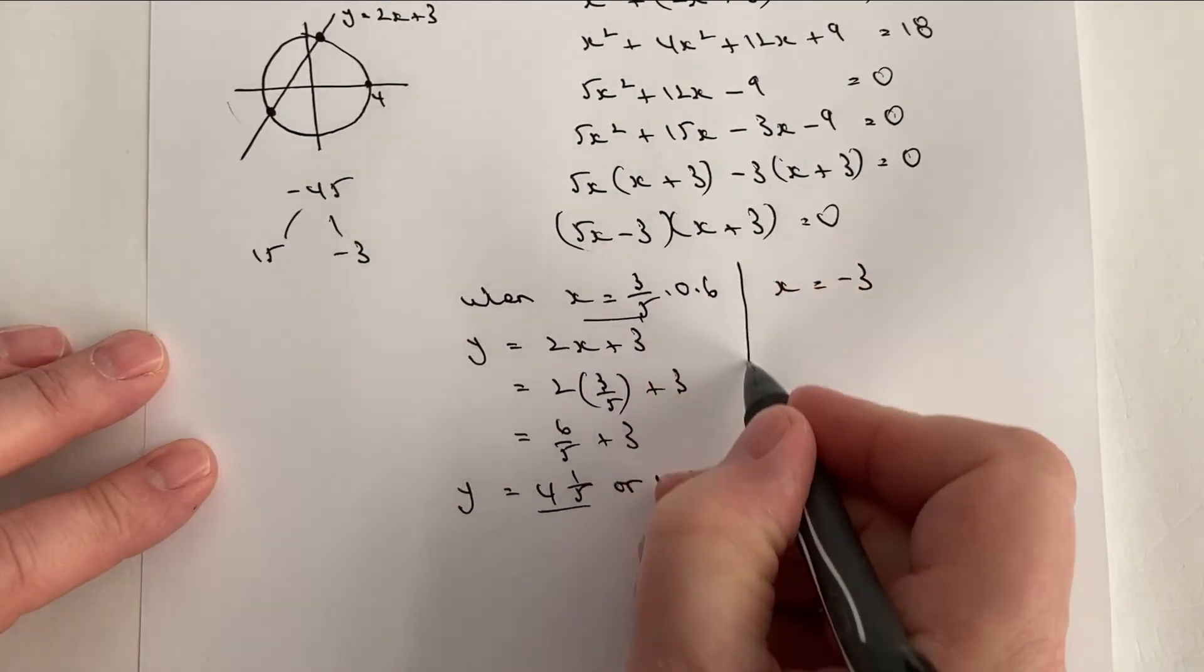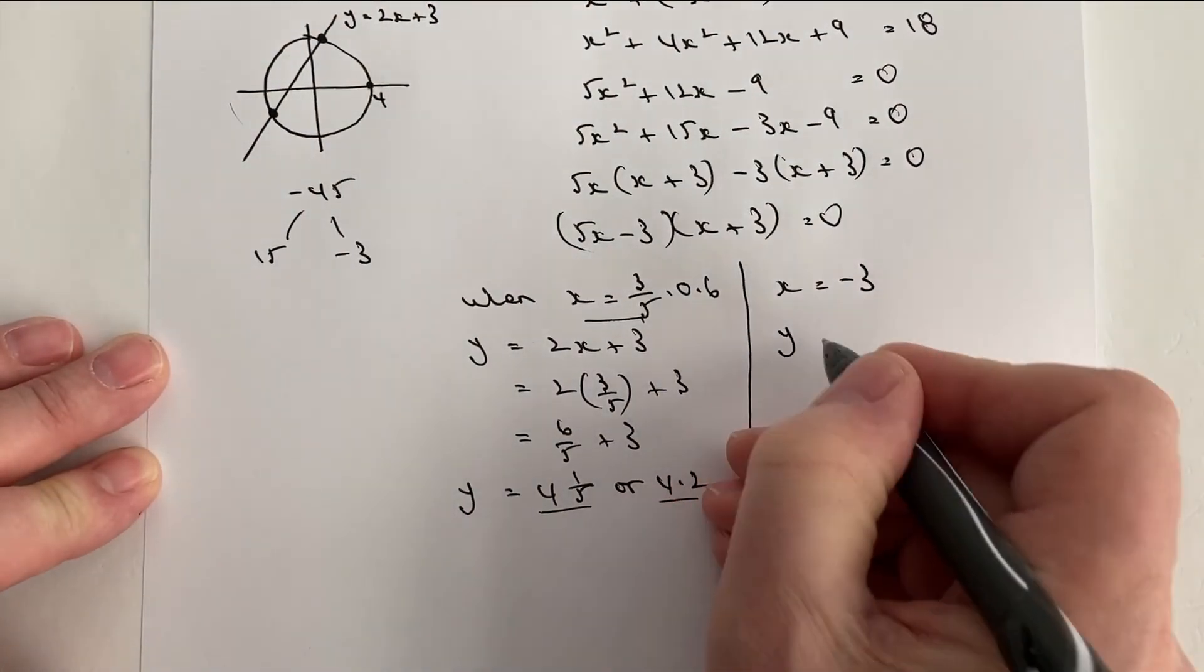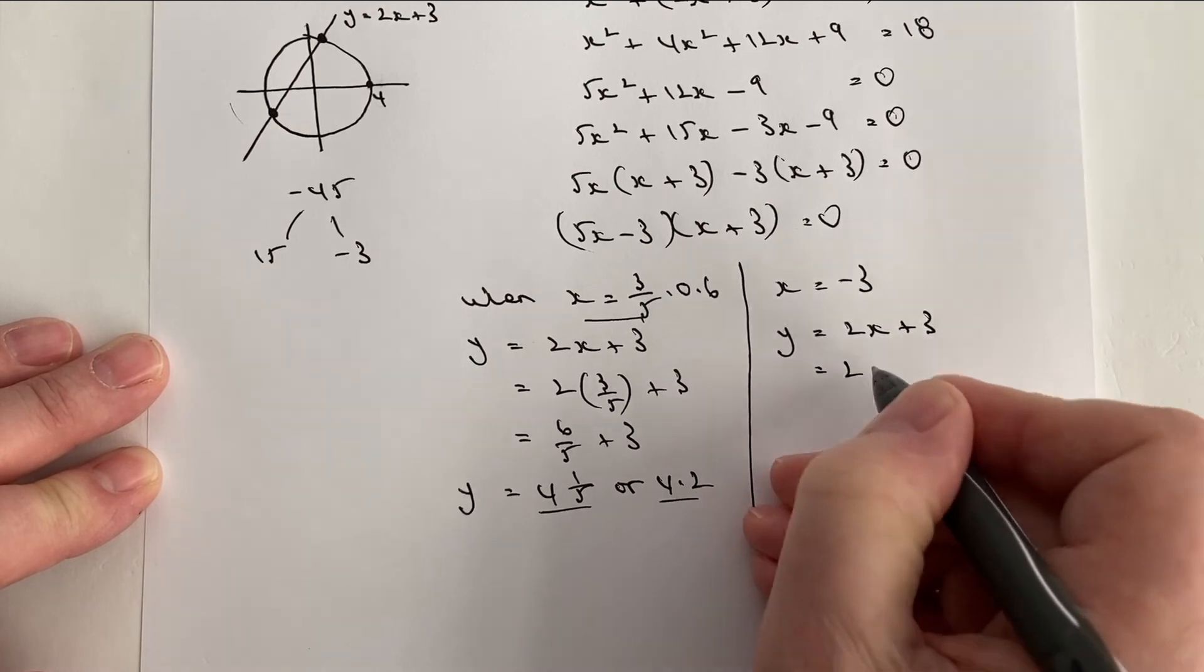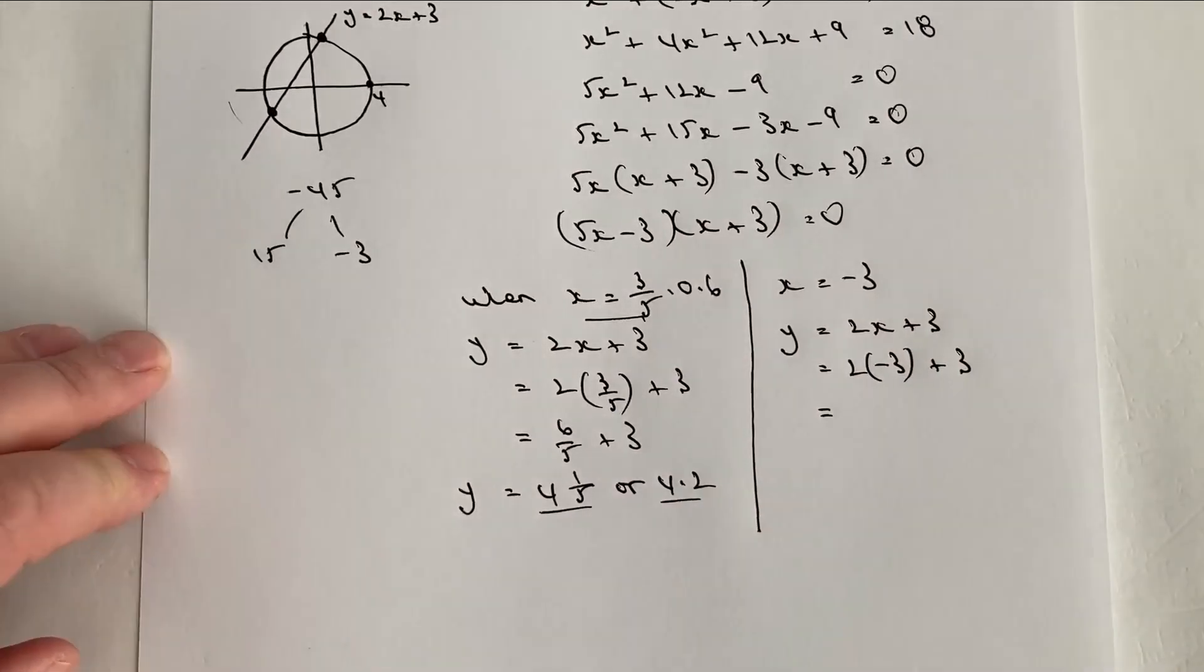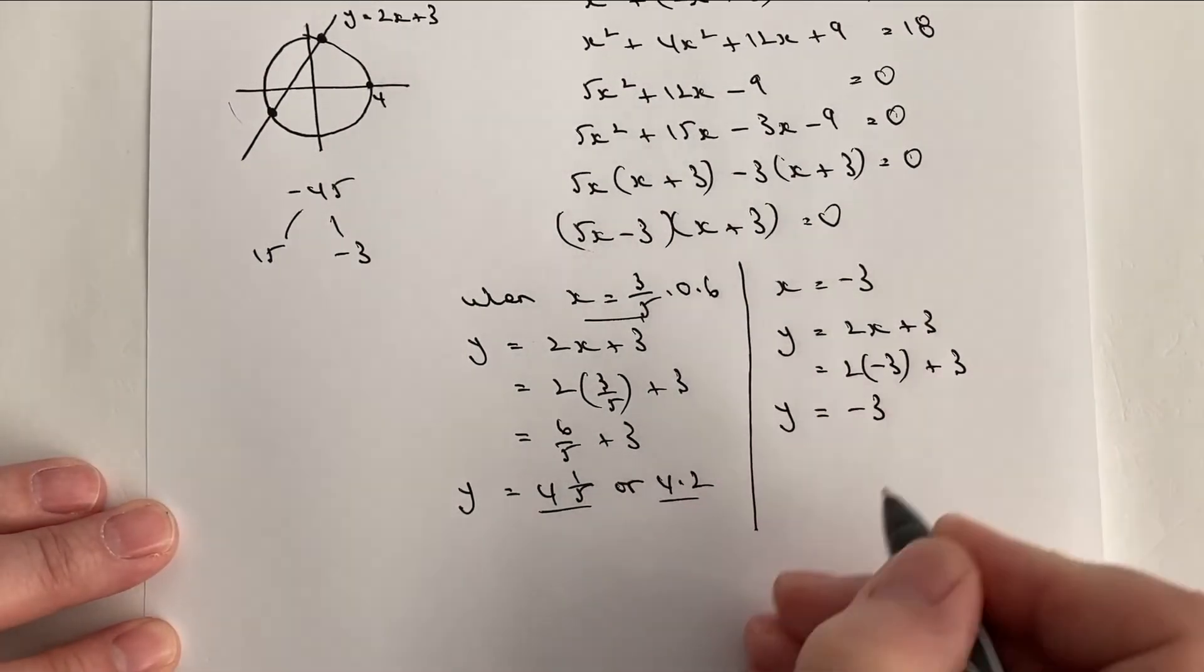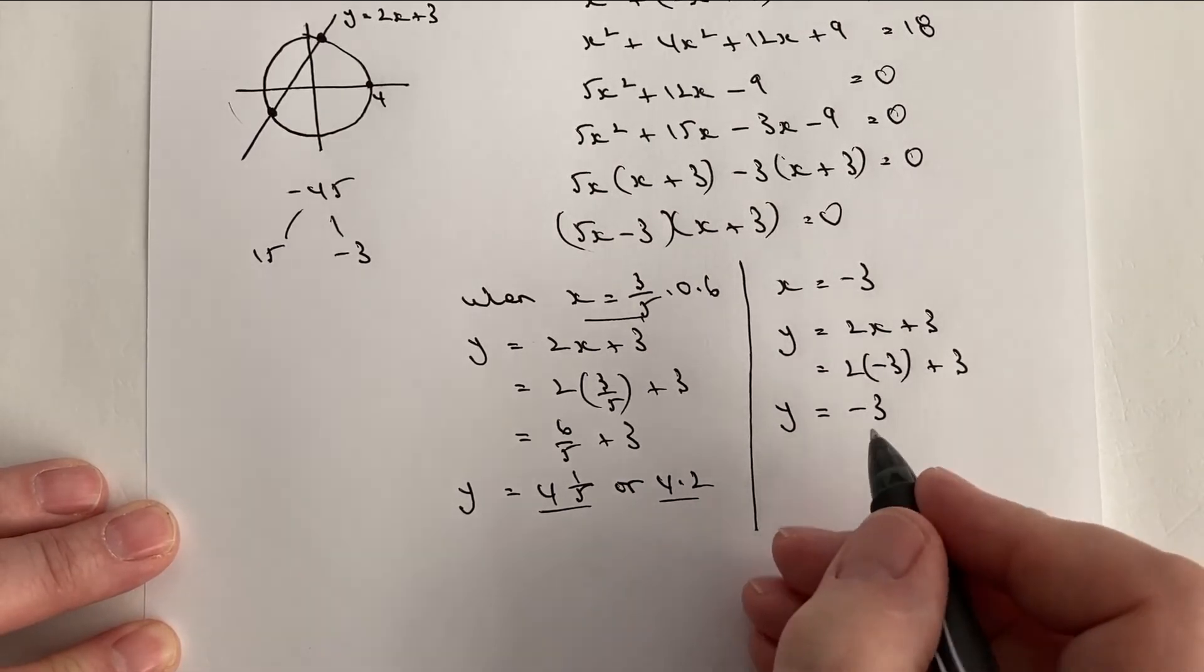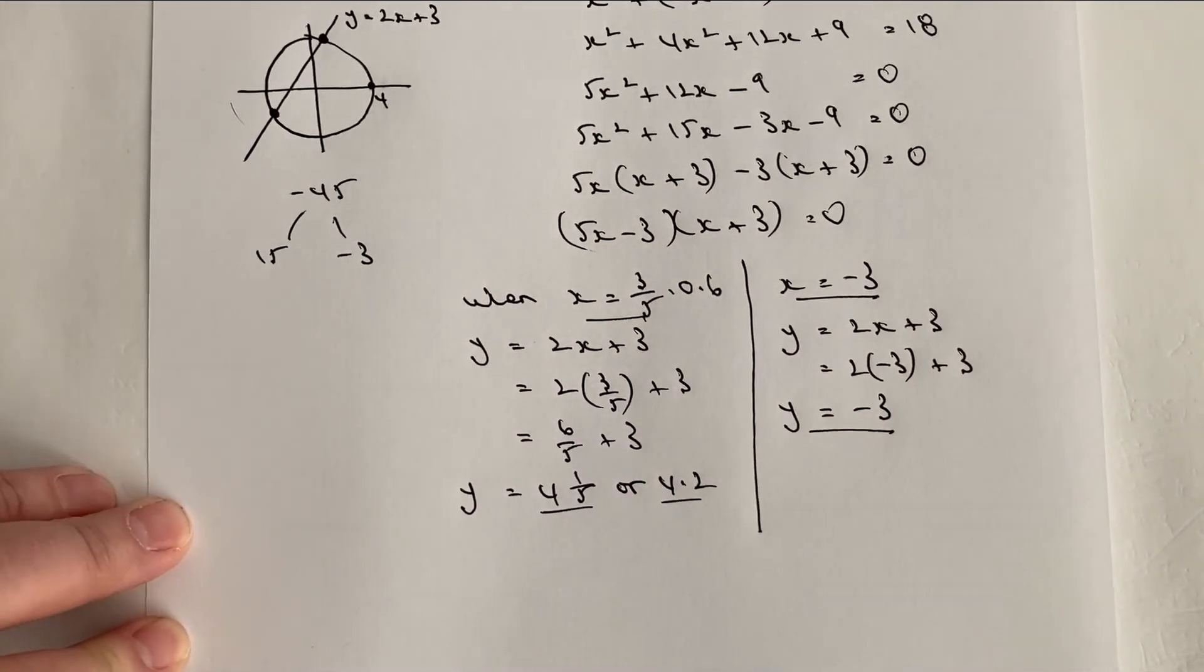So let's have a look at what happens when x equals minus 3. Well, again, I'm going to do y equals 2x plus 3. So that's going to be 2 times minus 3 plus 3. Well, that's going to be minus 6 plus 3 is going to give us y equals minus 3. So this one is going to be x equals minus 3, y equals minus 3.